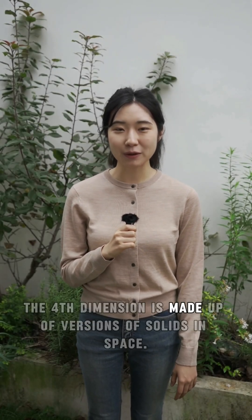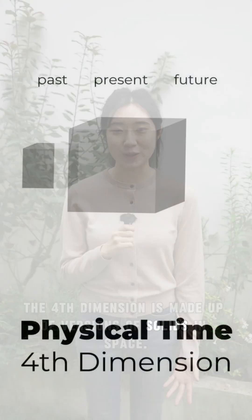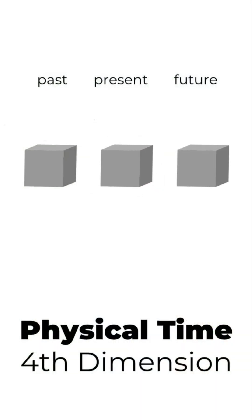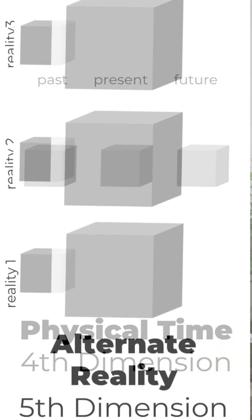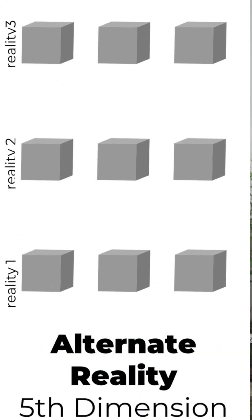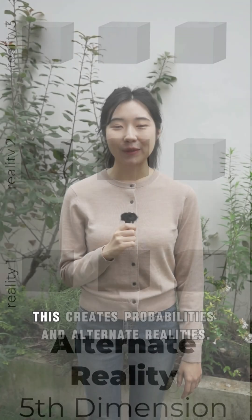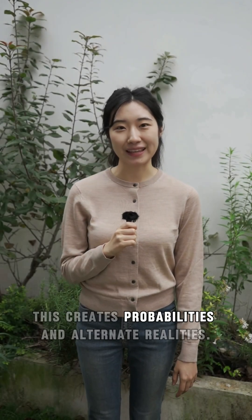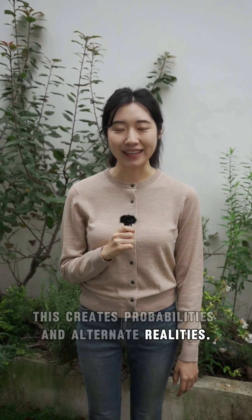The fourth dimension is made up of versions of solids in space. This creates a dynamic universe. The fifth dimension is made up of versions of universes, creating probabilities and alternate realities.